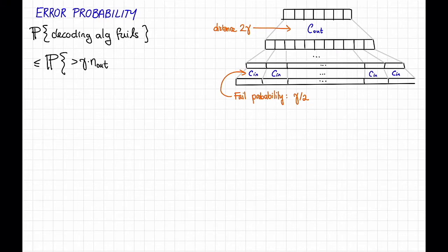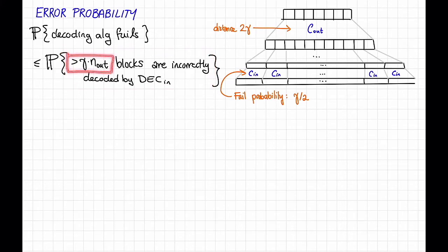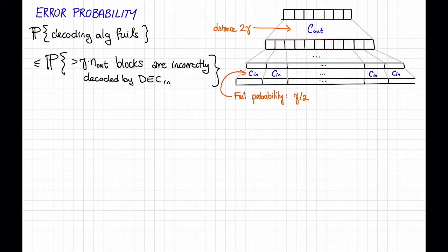The probability that this decoding algorithm fails is at most the probability that greater than gamma times n_out blocks are incorrectly decoded by the inner decoder. Indeed, if fewer than or equal to gamma times n_out blocks are incorrectly decoded, that means fewer than gamma times n_out symbols are incorrect, and C_out can correct those because it has distance 2 gamma — a gamma fraction of errors is half the distance, so the code can correct it.